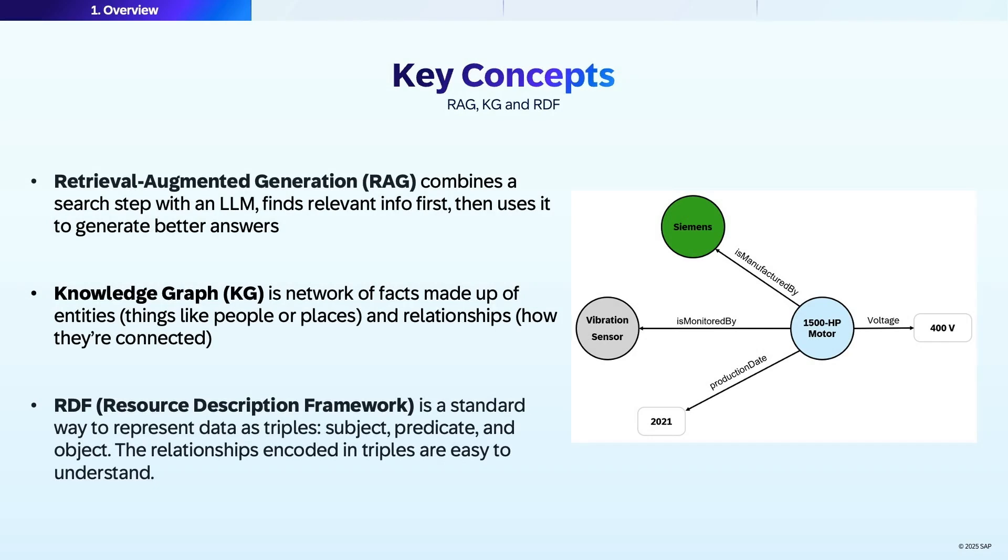Before you begin, it's helpful to know a few key concepts. Retrieval augmented generation combines a search step with a large language model, finds the relevant information first, then uses it to generate better answers.